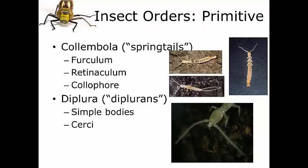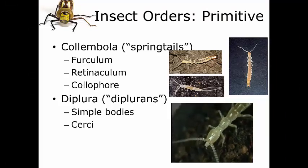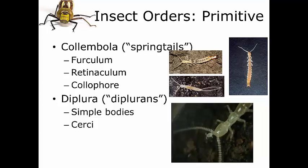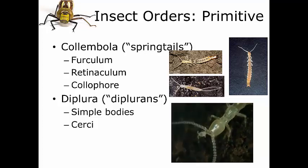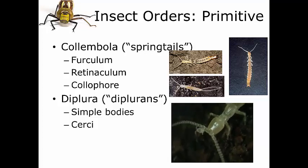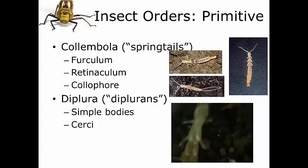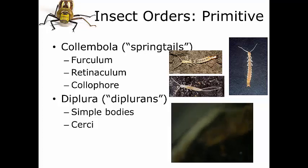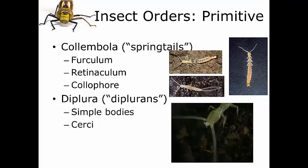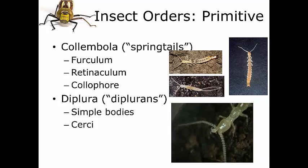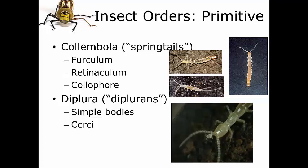The next order is called the Diplura. This one is so rare that we don't even really have a common name for it — we commonly call them diplurans. These insects are very tiny, usually less than 5 millimeters long, although there are some species that can get upwards of 50 millimeters but those are very rare. They have no eyes at all and have a narrow, elongate body. Their overall body is colorless, with moniliform antennae. They also have two abdominal cerci — extra organs that look like pinchers attached to the last abdominal segment. These cerci can break off if mishandled, but they will regrow over the next few molts.